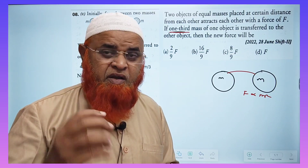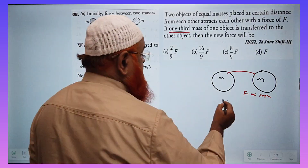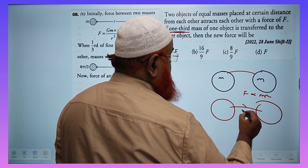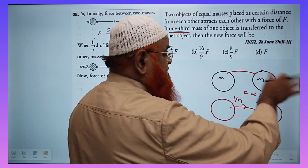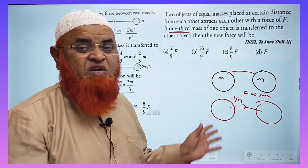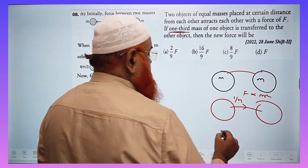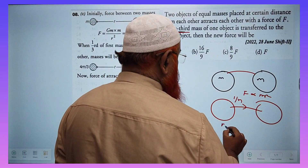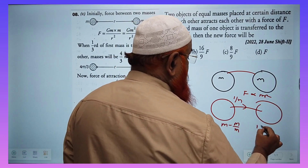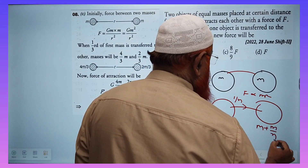I'll also tell you how to create this shortcut. For the general case, if one-by-nth of the mass is transferred to that side, then one mass becomes m minus m/n and the other becomes m plus m/n.